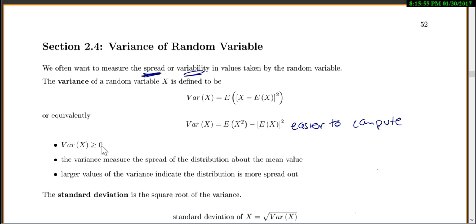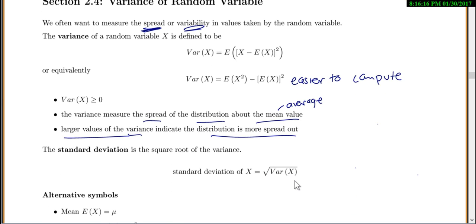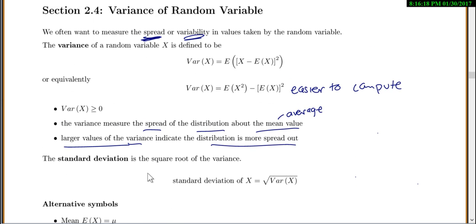A few notes: the variance will always be positive, because notice everything is getting squared. The variance measures the spread of our distribution about the mean value — mean is another word for average. Larger values of variance mean that our distribution is more spread out. To find standard deviation, you take the square root of the variance.